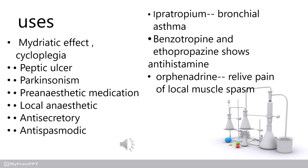In Parkinsonism, dopaminergic neurons are degenerated, leading to increased cholinergic activity. This increase results in the characteristic symptoms of Parkinsonism, including tremor — which is a cholinergic action. Anticholinergic drugs provide symptomatic relief by reducing this excess cholinergic activity.